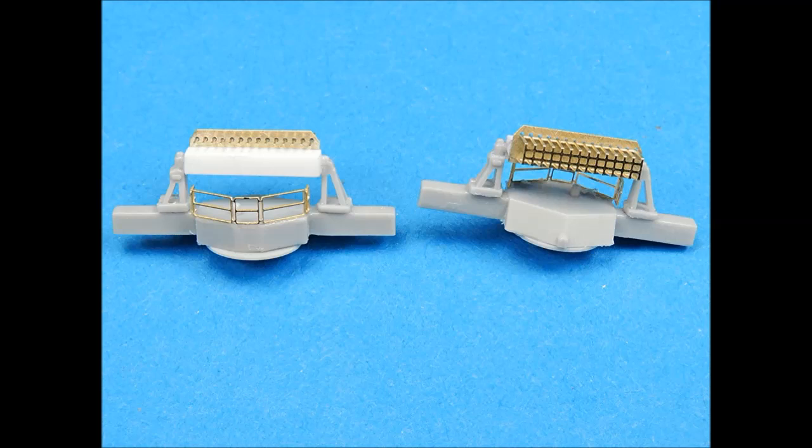These two 1-350 scale range finders were detailed with a combination of gold metal models photo etched parts and kit parts.